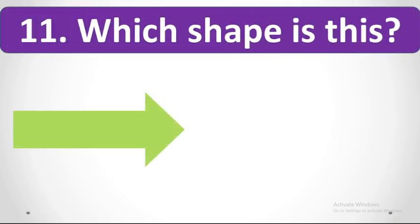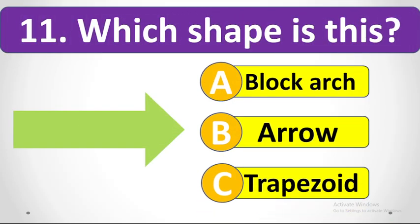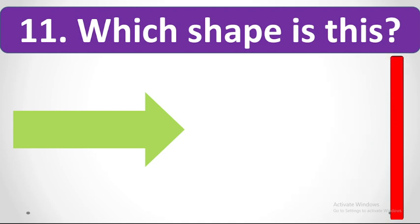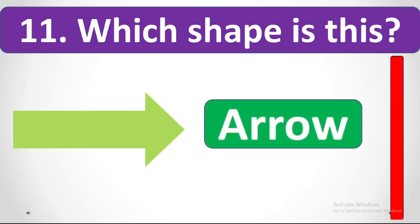Which shape is this? Your options are block arc, arrow, or trapezoid. Your time starts now. It's a semicircle.